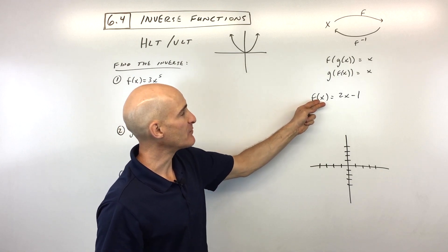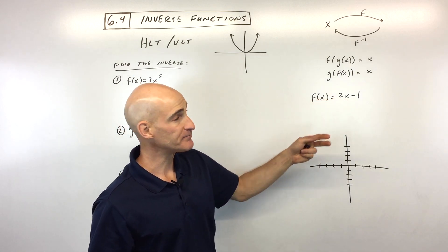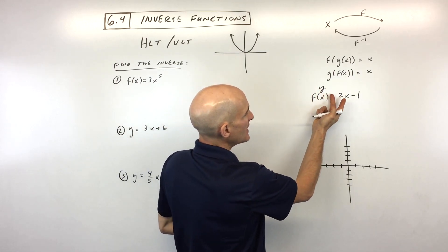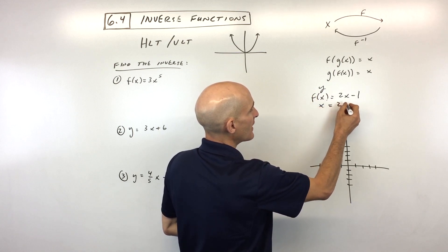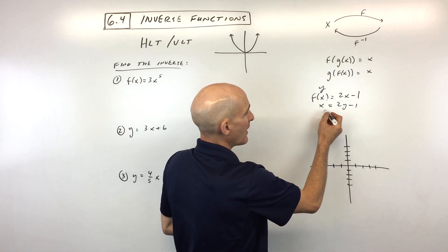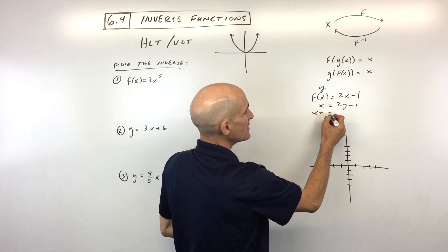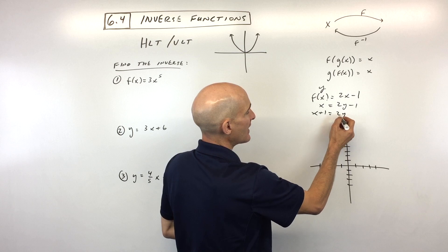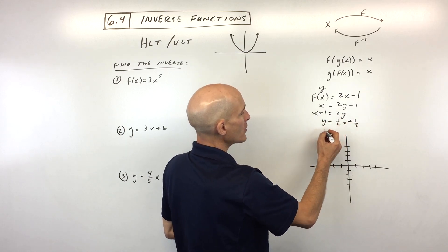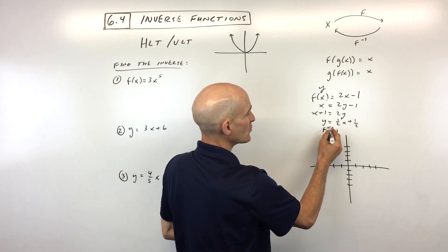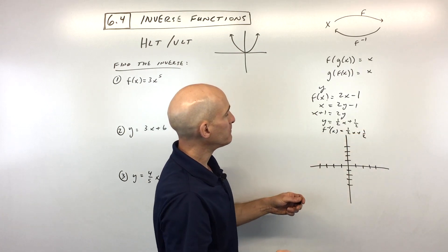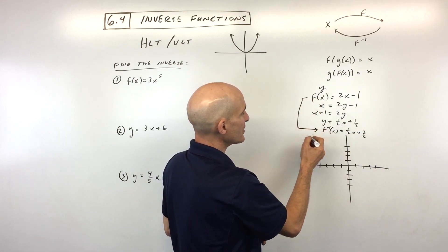Let's look at an example. Say we have f of x equals 2x minus 1. f of x is really like our output — we can think of this as our y value. If we interchange the x and the y, the input and the output, and then solve for this new y value by adding 1, we get x plus 1 equals 2y. Divide everything by 2, we get y equals one-half x plus one-half. Or you can write this as f inverse of x equals one-half x plus one-half.